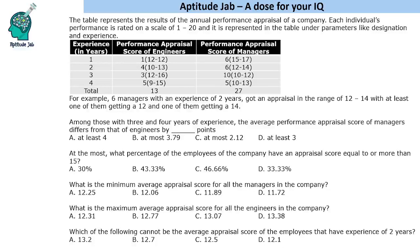Hello everyone, welcome to Aptitude Jab. This is a table-based set which was asked in TISSNET 2023. We are given a table that gives the results of annual performance appraisal of a company. Each individual's performance is rated on a scale of 1 to 20 and is represented in the table under parameters like designation and experience.